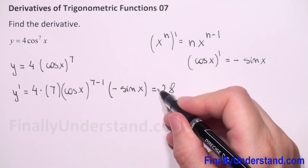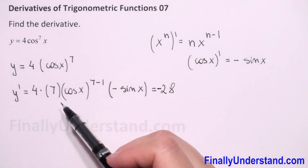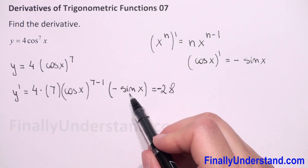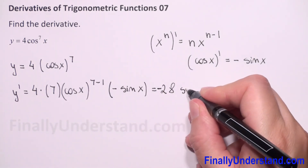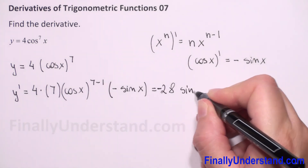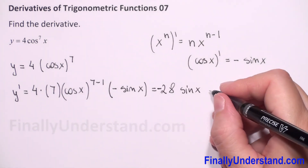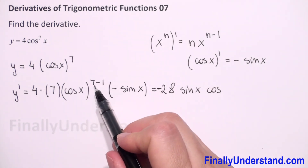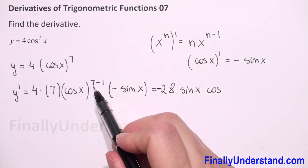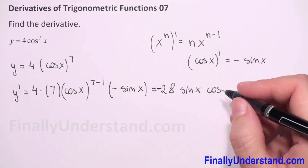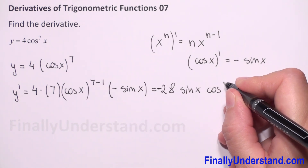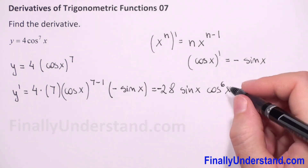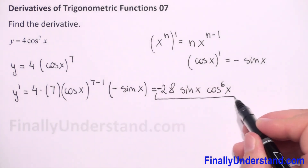This equals 4 times 7, which is 28, and because we have negative sine, it becomes negative 28. So the final answer is negative 28 times sine of x times cosine to the 6th power of x, since 7 minus 1 equals 6. This is my solution.